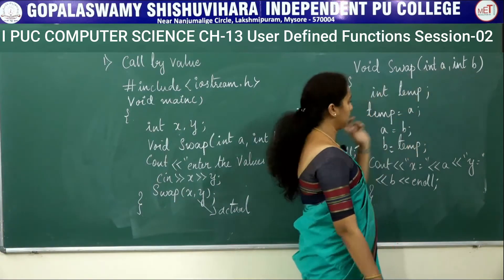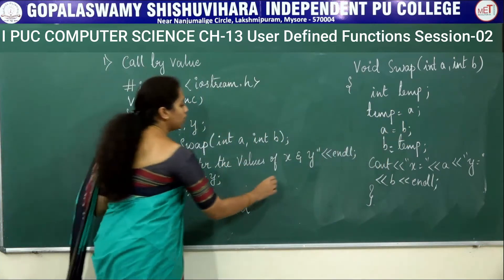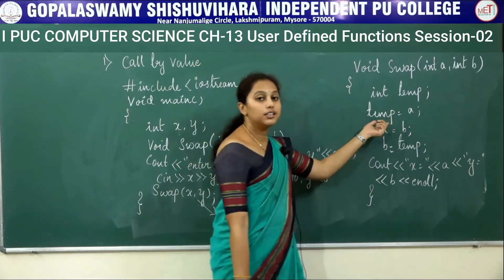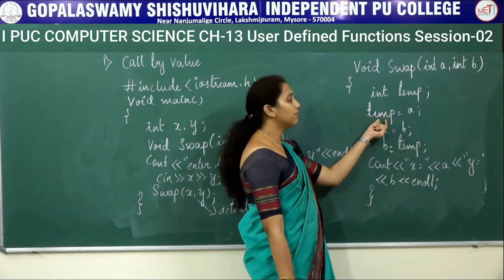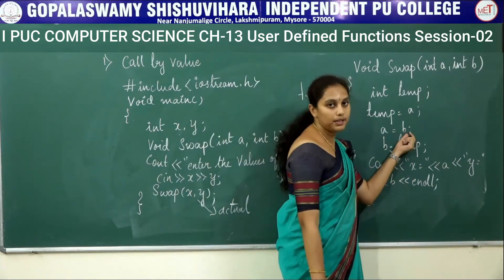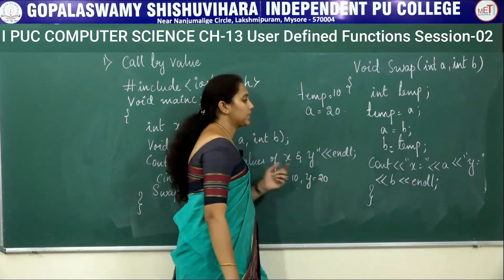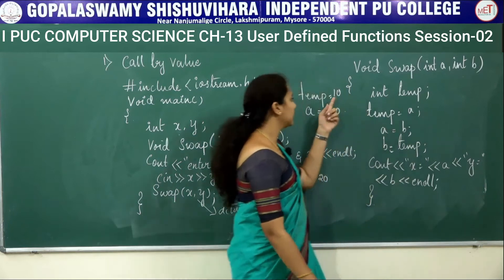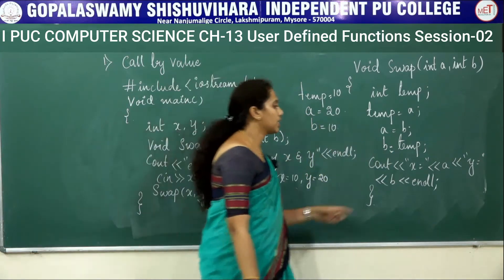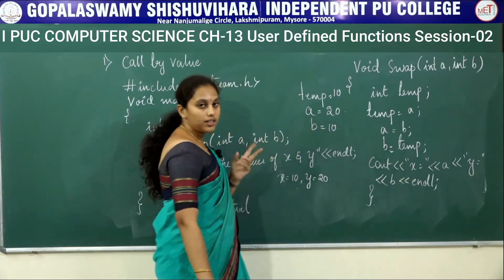In the function definition, void swap(int a, int b), an int temp variable is declared. For example, if the value of x is 10 and y is 20, temp is a temporary variable. We assign temp = a, so temp becomes 10. Next, a = b, so a becomes 20. Then b = temp, and since temp is 10, b becomes 10. We then print the swapped values: x equals 20 and y equals 10. This is called swapping of two numbers.